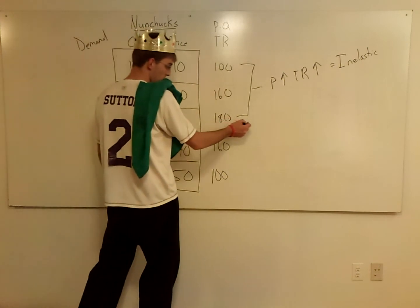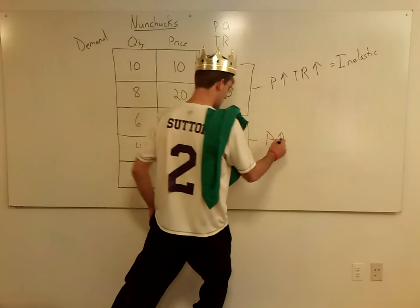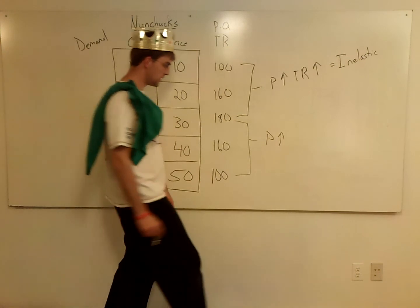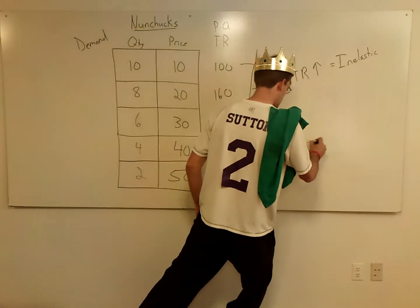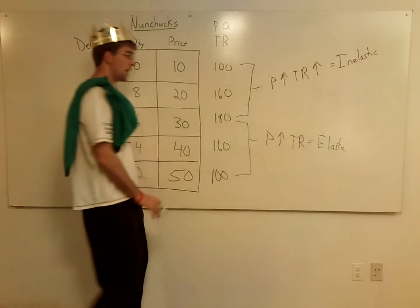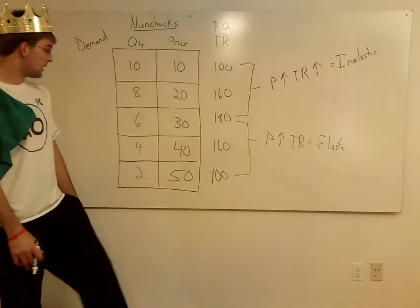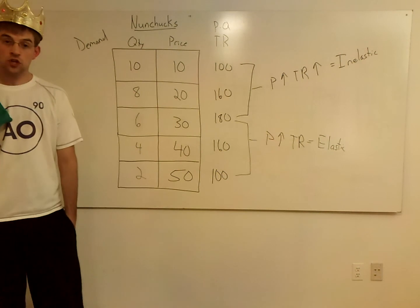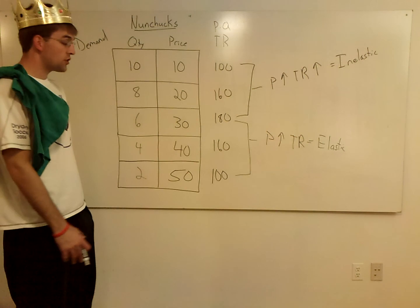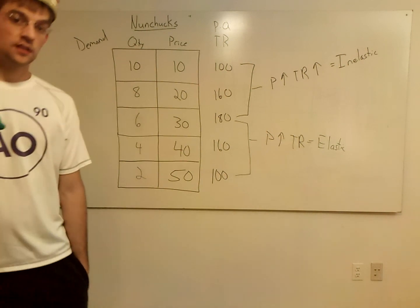Now from 30 to 50, the price has gone up from 30 to 50, but in this case total revenue has gone down — that equals elastic. We don't have a unit elastic range shown here because six is our turnaround point, but if you see the price changing and total revenue staying the same, you're unit elastic. That's the total revenue test — I'll show you the midpoint method next and we should get the same answers.